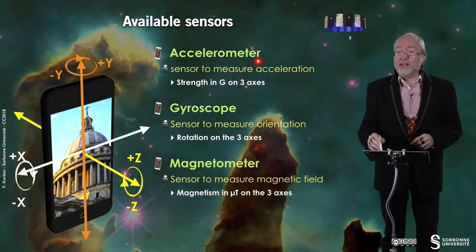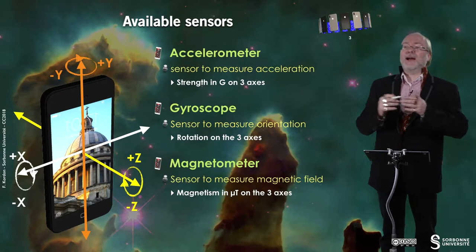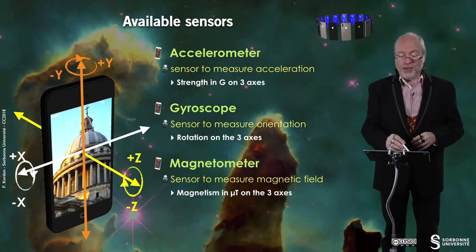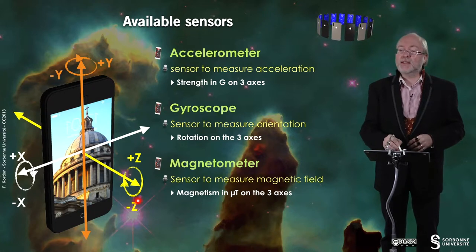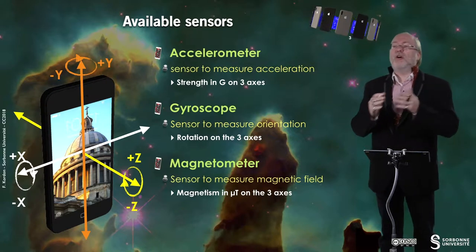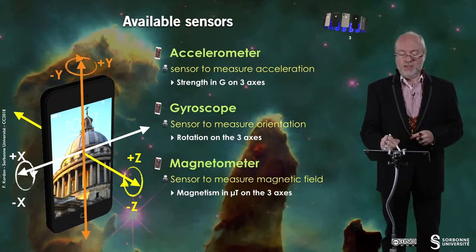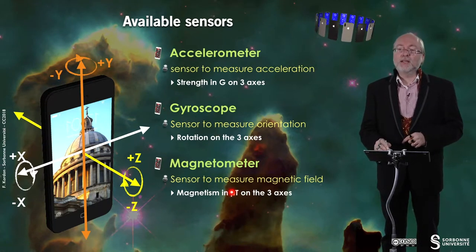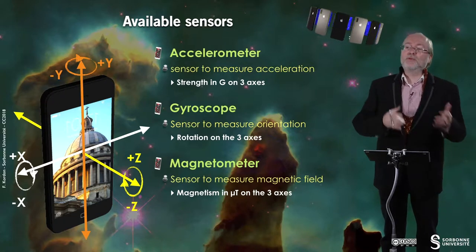There are several available sensors. First, the accelerometer, which measures acceleration in terms of G — G being gravitation — on the three axes: X, Y, and Z. The gyroscope provides sensors to measure orientation of the device among these three axes, and rotation is provided in degrees. The magnetometer provides sensors to measure the magnetic field along the three axes, and the magnetic information is provided in terms of micro-Tesla.